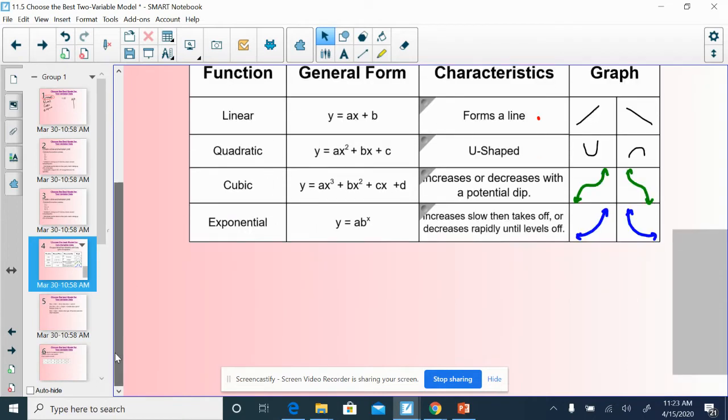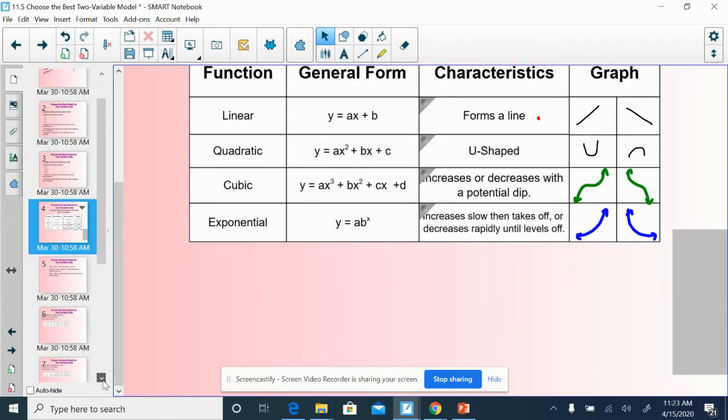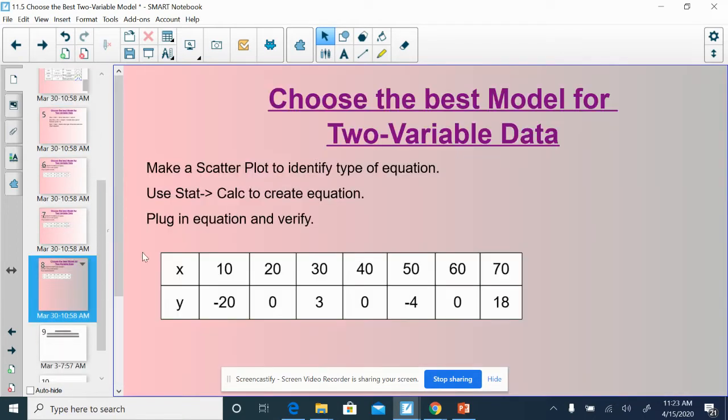So let's take a look at an example. Let's take a look at this equation or table. We have a two-variable data set, X's and Y's. What I'm asking you guys to do is write the appropriate equation for this data set. In order to do this, we are going to rely very heavily on our calculators.